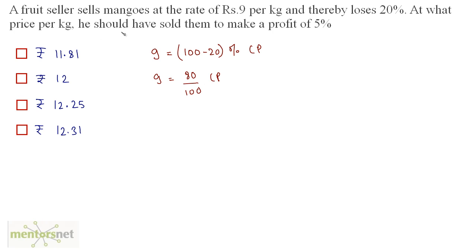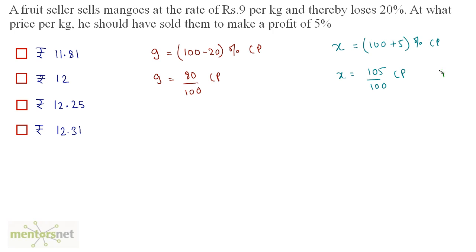Now, what is the selling price if he wants to make a profit of 5% at the same cost price? Let this selling price be X. So X equals 100 plus 5% of the cost price, which is 105% of CP. Dividing equation 1 by equation 2: X/9 equals (105CP/100) divided by (80CP/100). The cost prices and hundreds cancel out.